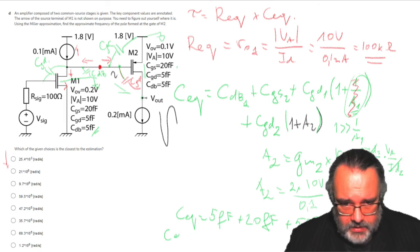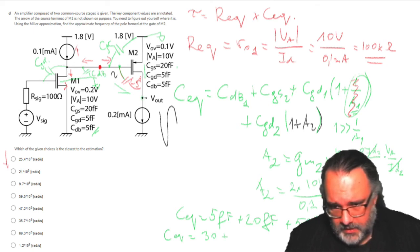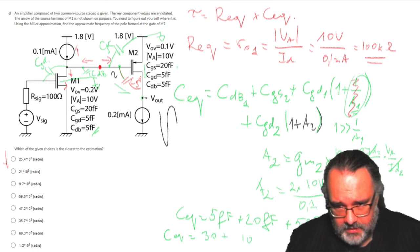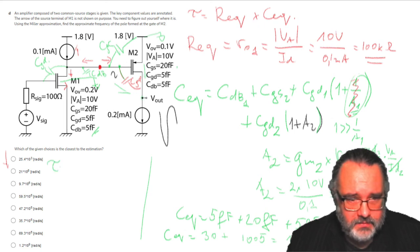Now I can calculate C equivalent: C drain bulk of M2, 5 femtofarads, plus C gate source, 25 femtofarads, plus C gate drain, 5 femtofarads, times 1 plus 200. This gives me 30 plus 1005, which is 1035 femtofarads.